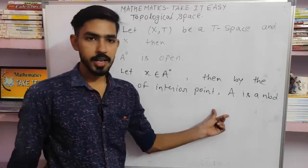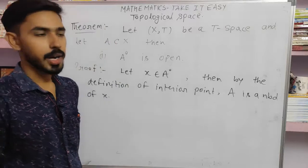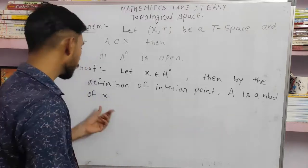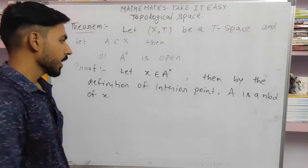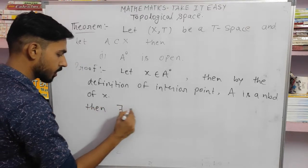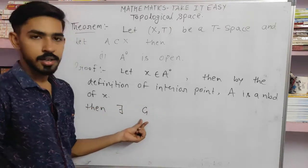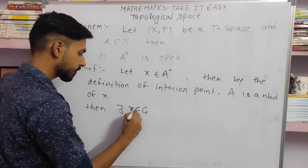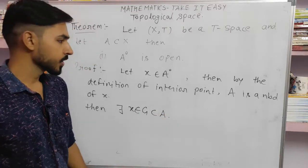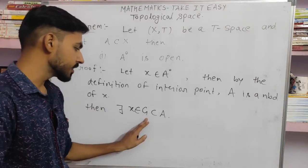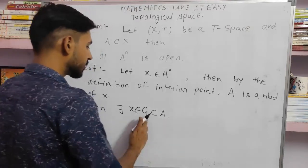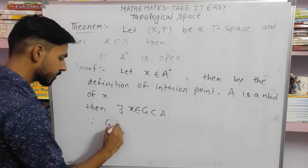By the definition of interior point, A is a neighborhood of x. If x is an interior point of A, so x belongs to A interior implies A is a neighborhood of x. Then there exists a set G containing x — x belongs to G, and G is a subset of A. By the definition of neighborhood, there exists an open set G which is a subset of A and which contains x. Since G is open.